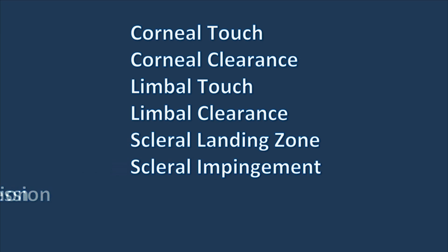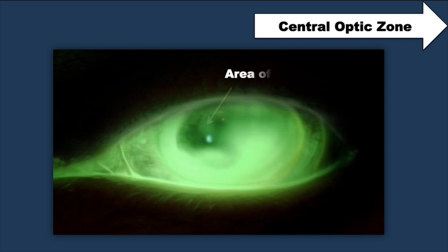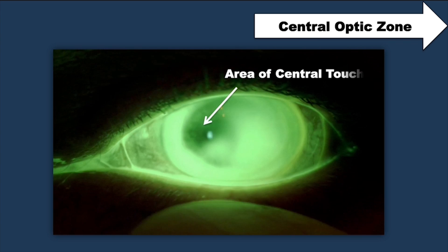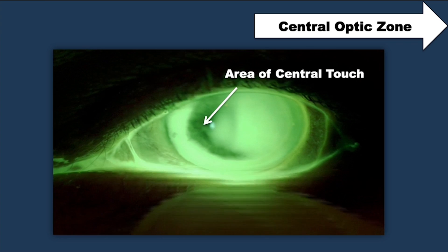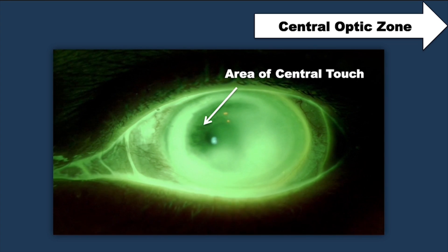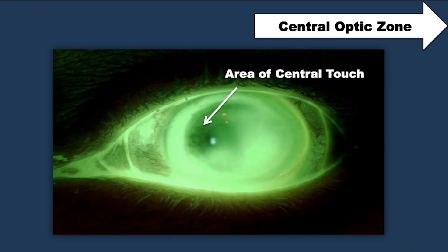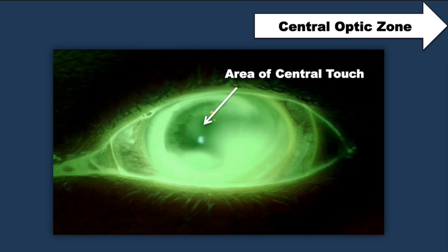Each of these zones needs to be evaluated when fitting a patient. The following are terms that are typically used to describe the lens fit. Central touch is when the surface of the lens is touching on the central or paracentral portion of the cornea. When this occurs, you'll need to increase the sagittal depth.